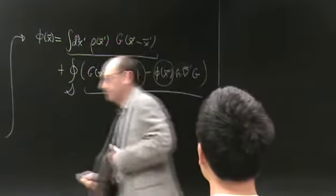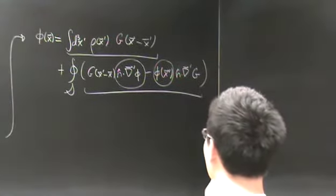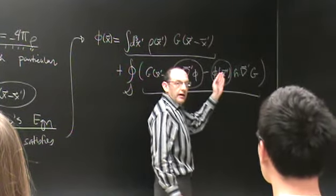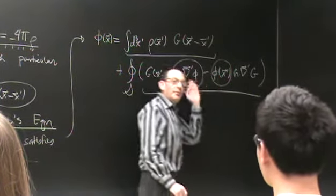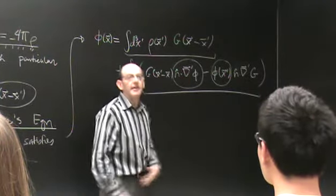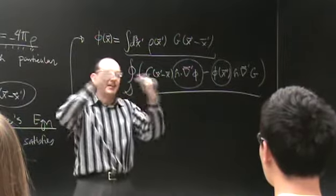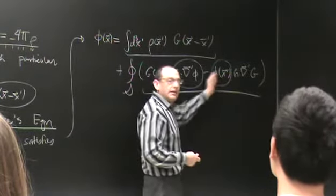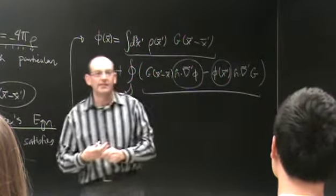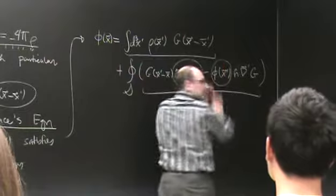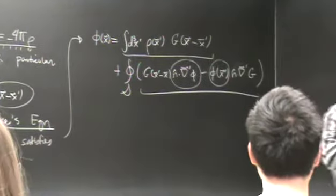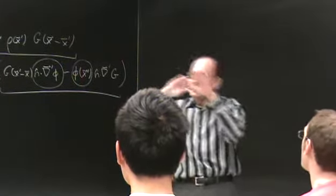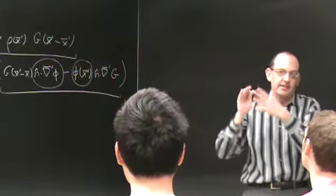These are the Dirichlet boundary conditions if you specify the potential everywhere, and the Neumann boundary conditions are if you specify the normal derivative everywhere. And then mixed boundary conditions if in some regions you specify the potential and in some places you specify the normal derivative. If I specify the potential everywhere, I can't specify the normal derivative as well — I can't specify both things and have a unique solution.